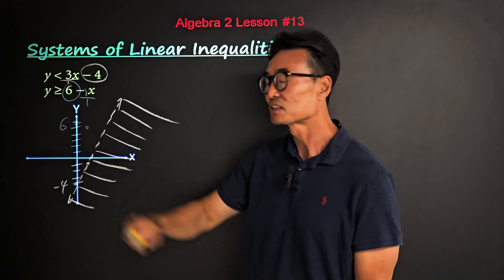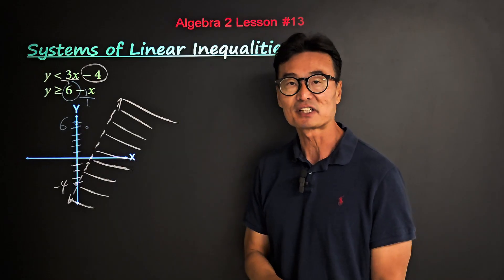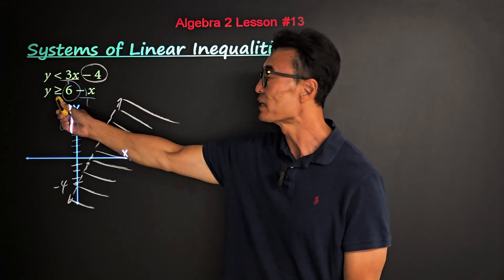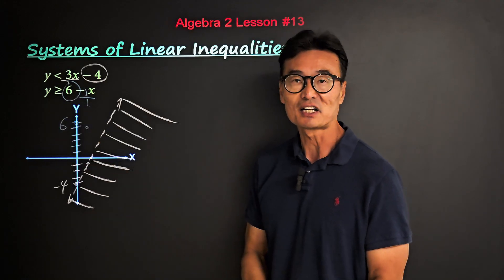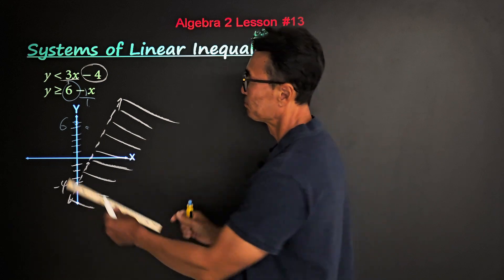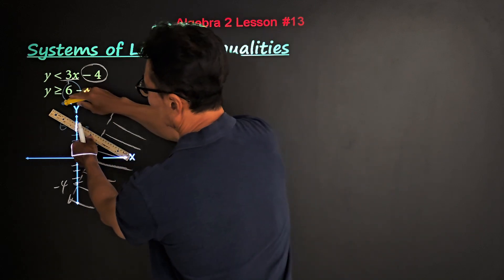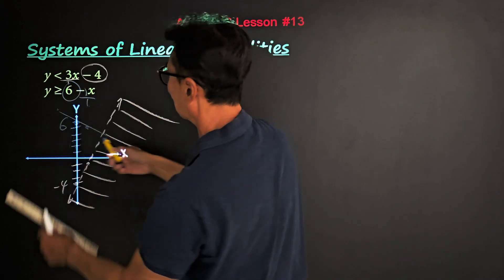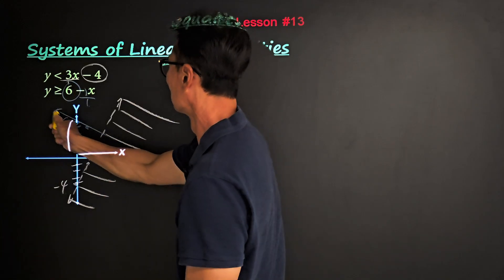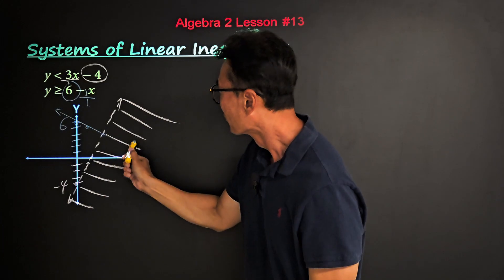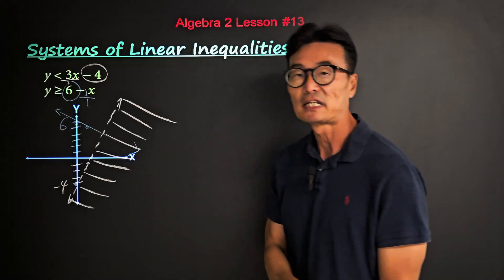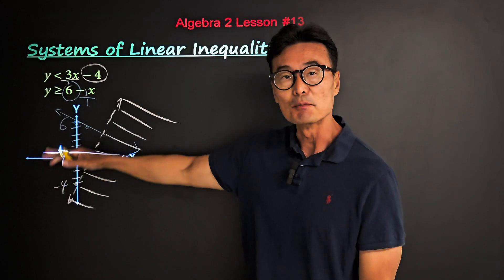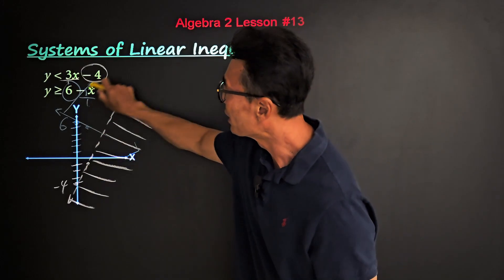There's our second point. Since this inequality is greater than or equal, it's going to be a solid line. Greater than means above the line, so we're going to shade above.